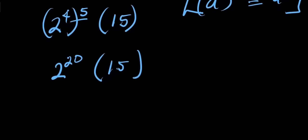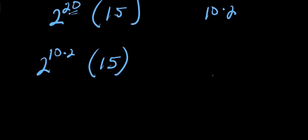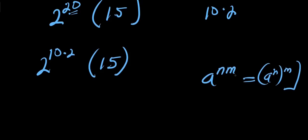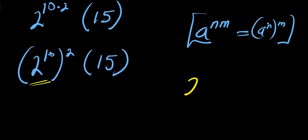Instead of keeping the exponent as 20, we rewrite it as 10 times 2, so we have 2 to the power of 10 times 2 times 15. Using the rule a power (n times m) equals (a power n) power m, this becomes 2 to the power 10, all squared, times 15.